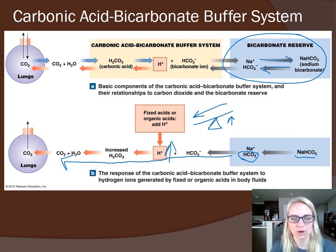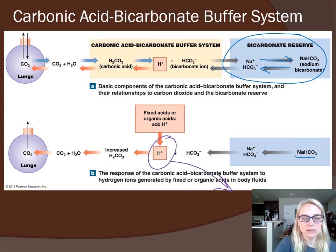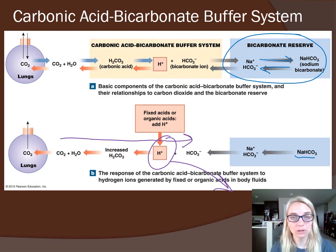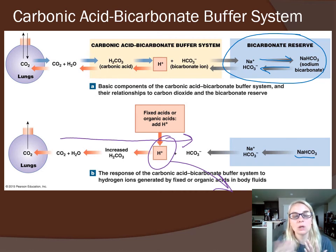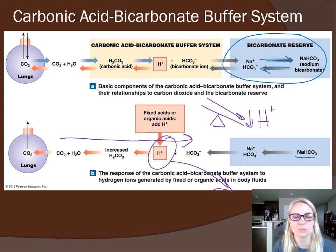This buffer system can also work in the opposite direction. If hydrogen ions decrease, the equation drives right to produce more hydrogen ions. The brain detects slightly alkaline blood and slows the respiratory rate — retaining more CO2 in the lungs, keeping it in the blood longer — driving the equation right to replace lost hydrogen ions.